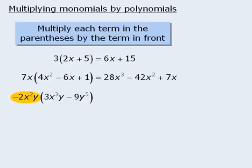First we'll multiply negative 2x squared y by 3x cubed y to get negative 6x to the power of 5 y squared. And then we'll multiply negative 2x squared y by negative 9y to the power of 5 to get plus 18x squared y to the power of 6.